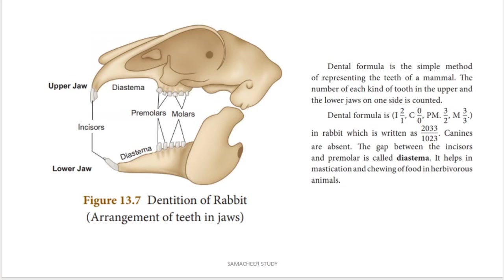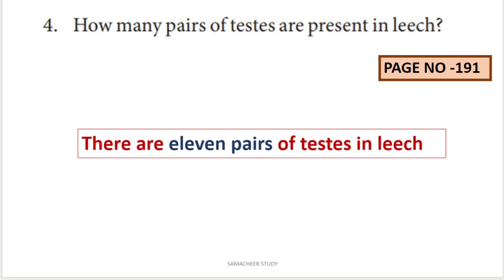Next question: how many pairs of testes are present in leech? Answer: 11 pairs of testes are present in leech.